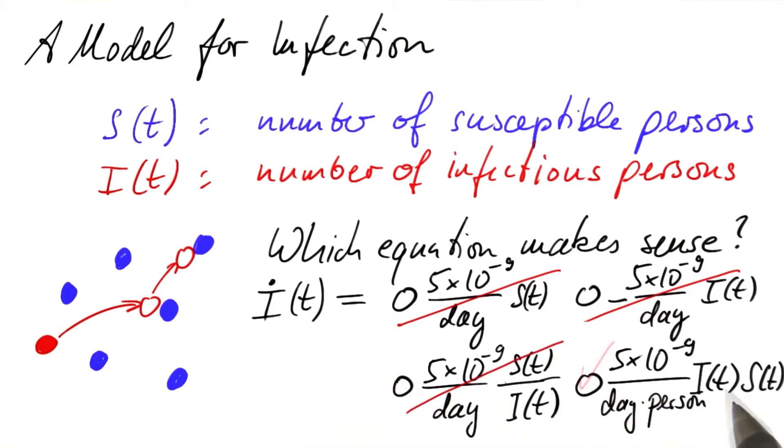This is what is left. And it makes sense. Let's look at the units. A number divided by days and persons times persons squared. What we are left with is person per day. That's what we need. And this product has the right behavior. If we increase the number of infectious persons, we increase that rate. We have more encounters. That makes sense.